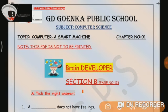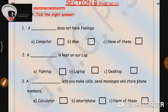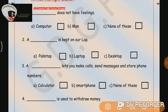Part A is, tick the right answer. Number 1: A dash does not have feelings. A. Computer. B. Man. C. None of these. Correct answer is, yes, computer. So we are going to tick computer.